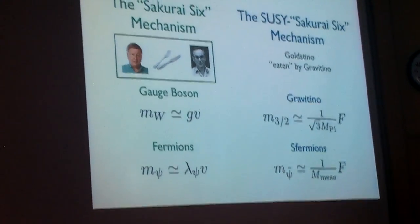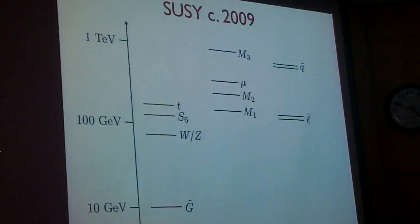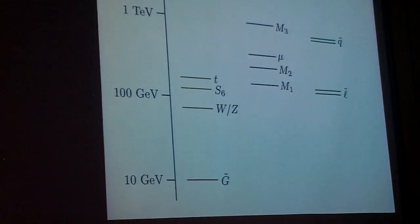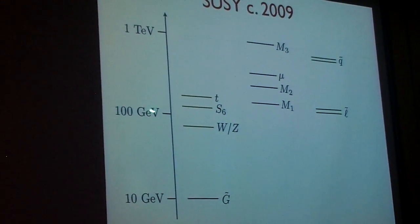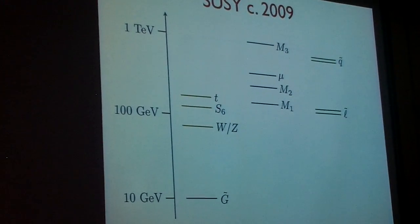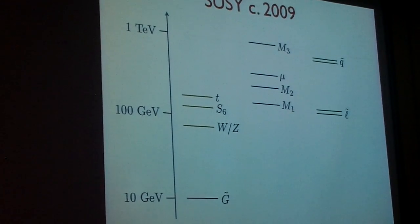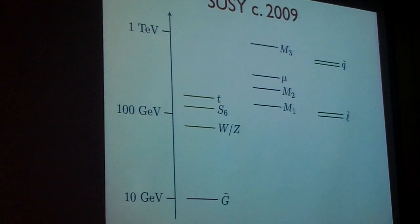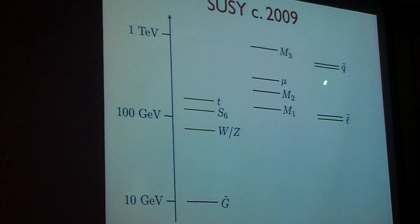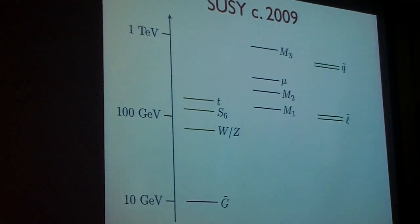So if I break supersymmetry only once, then this Susy-Sakurai-Six mechanism is at work. And if you want to know what the spectrum you might expect to see at the LHC is, well, here it is. Here are the fields that we're celebrating today. The W and Z bosons that get their mass from spontaneous symmetry breaking, spontaneous electroweak symmetry breaking, the top quark which gets its mass from spontaneous symmetry breaking, and the Higgs boson that perhaps gets its mass from itself. If supersymmetry is realized in nature, then there will be supersymmetric partner particles for all the standard model degrees of freedom. They're going to get a mass from spontaneous supersymmetry breaking. And the effective gauge boson for supersymmetry, the gravitino, it will also get a mass, and these masses are correlated in some way.